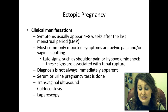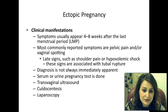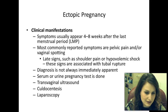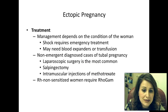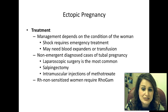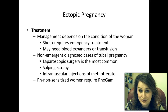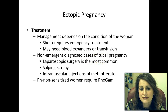Diagnosis is not always immediately apparent. Serum or urine pregnancy test is done first. Transvaginal ultrasound is the first-line tool for picking it up. Culdocentesis and laparoscopy may also be performed. Treatment management depends on the condition of the woman. Shock requires emergency treatment—ICU, possibly blood expanders or transfusion.